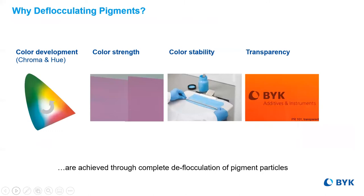For instance, the color development, the strength and stability, and even the transparency, is best achieved when working with primary particles. Agglomerates, or the act of reflocculation, would define the major causes of poor pigment stabilization. Most pigments are purchased in dry powder form in their low-energy state. Even those pigments that are pre-dispersed may need some assistance to achieve optimal color development.